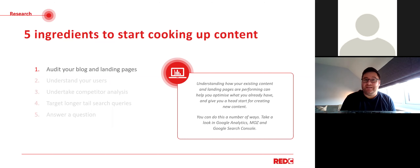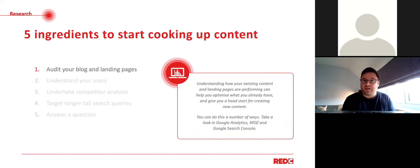Point one is understanding your existing content. Your existing content on your website may not just be your blog — if you think about any landing pages or non-product or transactional pages, they're all valuable pieces of content. By auditing them and seeing how people are interacting with them — things like average time on page, bounce rates, exit rate — you'll be able to see if you've already got existing pieces of content that you could optimise further. That's a quick win: a piece that was performing better last year could be improved. There are a couple of ways you can do this in Google Analytics.